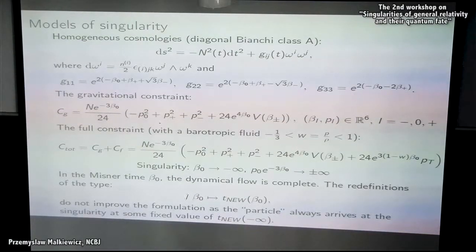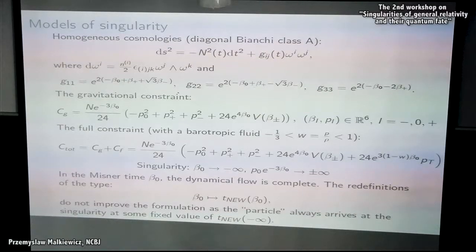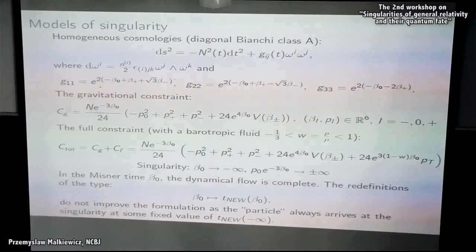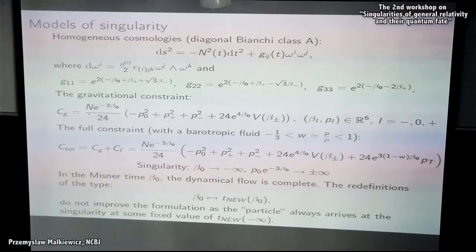Also, relabeling the internal clock doesn't improve the situation, because the particle representing the universe still hits the singularity at some fixed, possibly finite, value of the clock. What you need is a different slicing of the constraint surface with the internal clock of the dynamical orbits, to introduce truly incomplete flow in your Hamiltonian formulation. The way to do it is to choose an internal clock such that the solutions within this model arrive at the singularity at different values of this clock — then you have incomplete Hamiltonian flow, and you can try to see what quantization of this kind of formulation leads to.